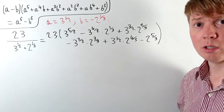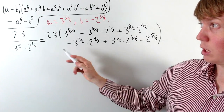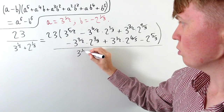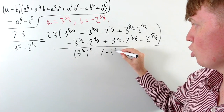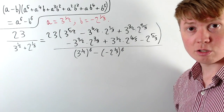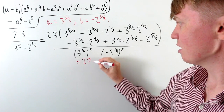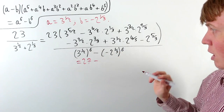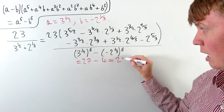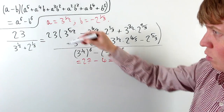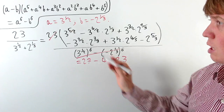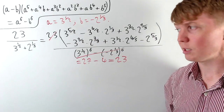Our denominator we know is going to be a to the 6 minus b to the 6. This is root 3 raised to the power of 6 minus negative 2 to the one third raised to the power of 6. So 3 to the half raised to the power of 6 is 3 cubed, or 27. Then we take away: negative 2 to the one third raised to the power of 6 is 2 squared, or 4 — so we take away 4. The denominator is 23, which cancels with the factor of 23 in the numerator, so there's actually no denominator in the end.